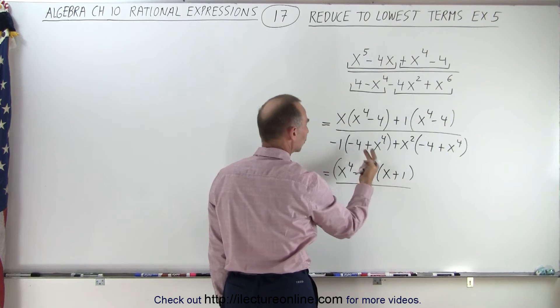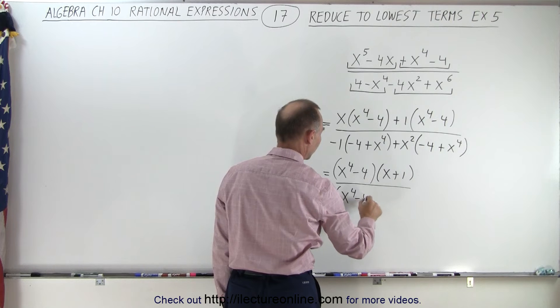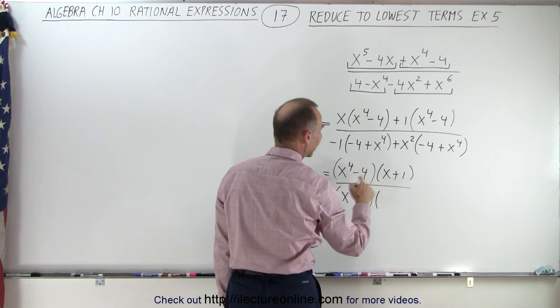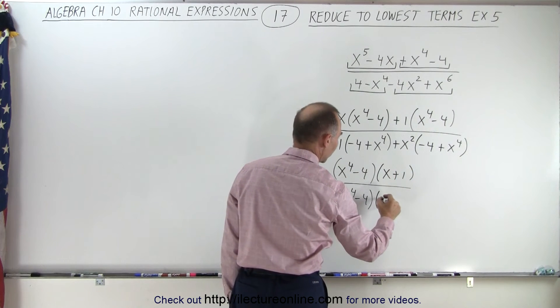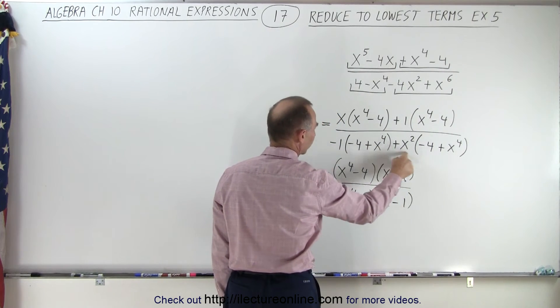In the denominator, I'm going to reverse the order and factor out x to the fourth minus four. Then I'm left with a negative one and a plus x squared, so I can write this as x squared minus one. So I also reversed the order of these two.